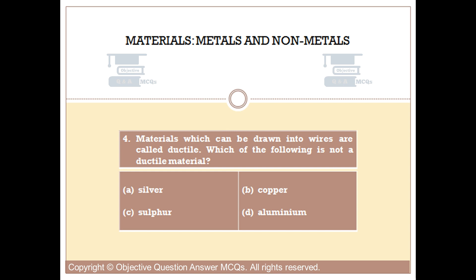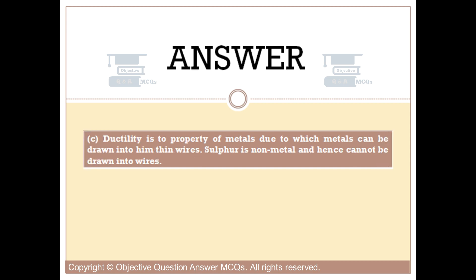The right answer is option C. Ductility is the property of metals due to which metals can be drawn into thin wires. Sulfur is a non-metal and hence cannot be drawn into wires.